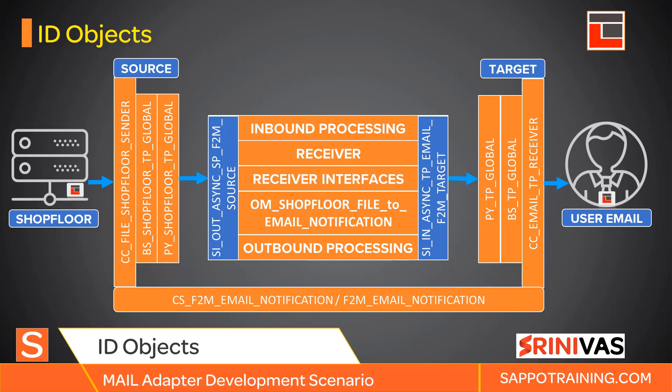At the source side we have the shop floor system channel, the CC file channel, and on the target side we have CC email techiepress receiver. Then we have party and business system representing shop floor, and party and business system representing techiepress. We have created two service interfaces — out and in — representing the outbound and inbound messages. Then we have an operation mapping to do one-to-one mapping, to ensure we have the messages coming from the source mapped to an email ID.